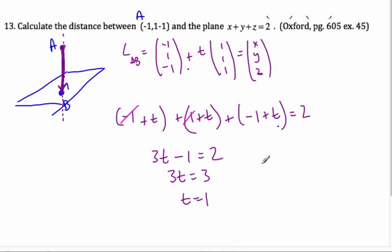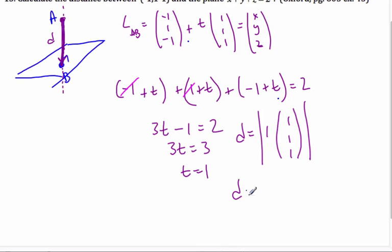And so I want to find the length of T being 1, of (1, 1, 1). To find the length of it, I look for the magnitude, and that will be my distance. So distance D is simply going to be the square root of 1 squared plus 1 squared plus 1 squared, which is the square root of 3, the shortest distance.